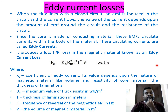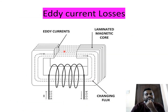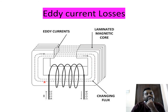Note the key difference: hysteresis loss is proportional to frequency f, whereas eddy current loss is proportional to f². There are changing flux lines linking with the coil, and because of the induced currents, eddy currents form in the core, represented by circulating current lines, resulting in power loss as part of the iron losses.